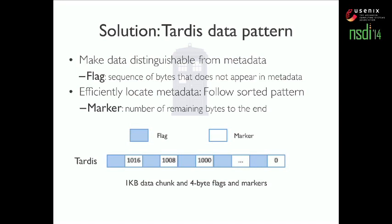For example, if a client writes one kilobyte of data — assuming both flags and markers are four bytes — it will start with a flag followed by the number 1016, meaning 1016 bytes remain, then another flag, 1008, and so on.